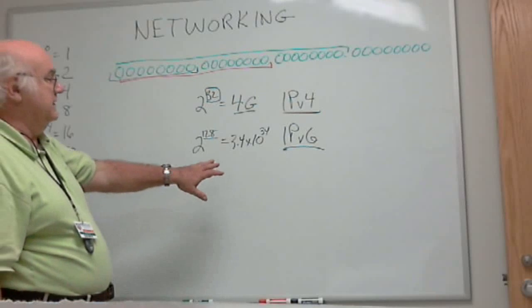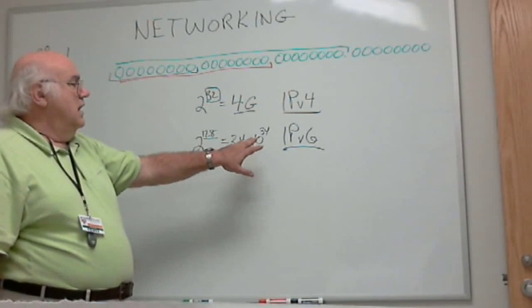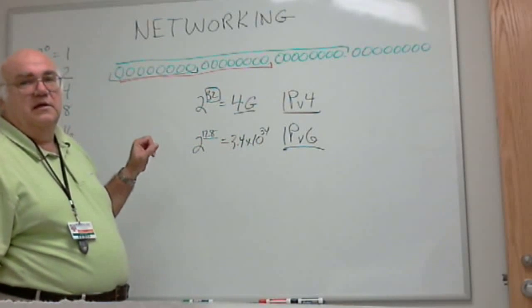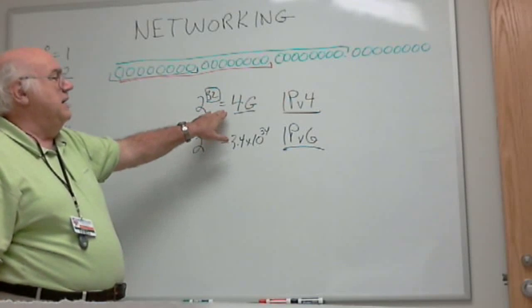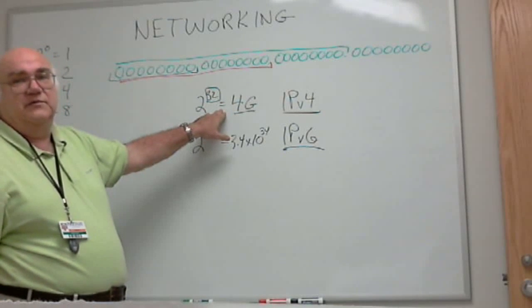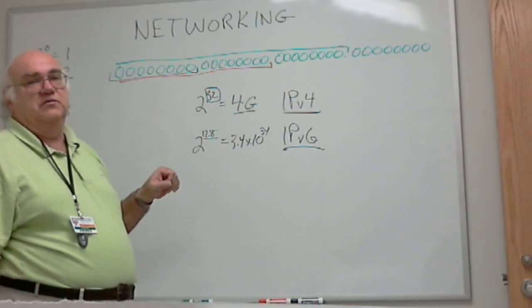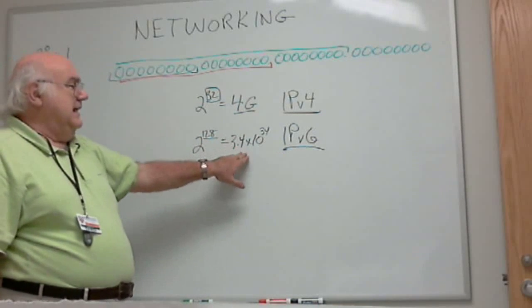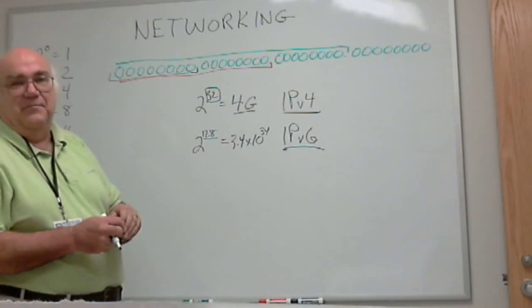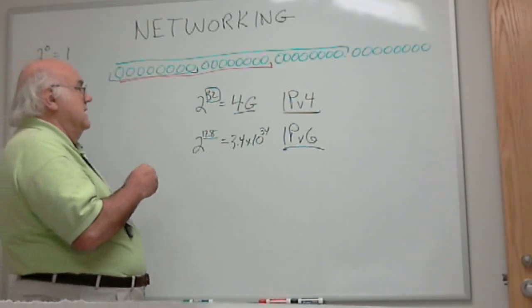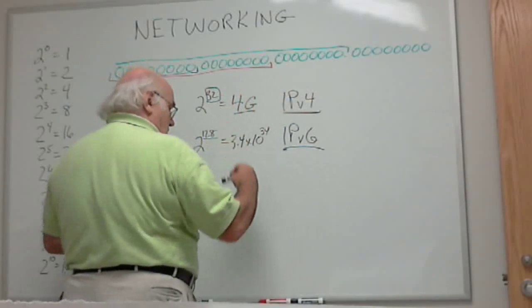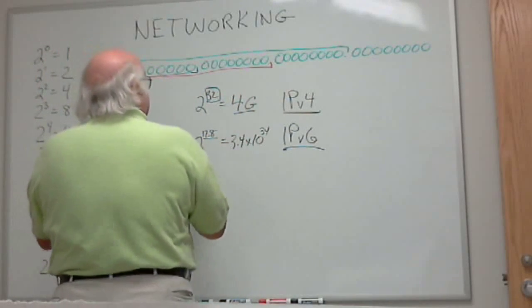To put it in perspective, everybody on earth could have their own IPv4 address space. Everybody on earth could have 4 billion different addresses to use in this number. That's how big it is. So, just understand that we're still trying to work, though, with IPv4. We're trying to extend it.